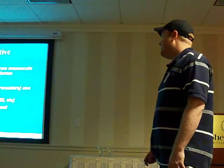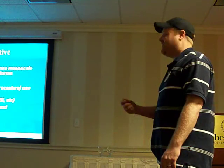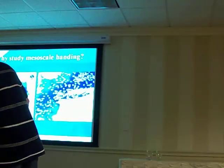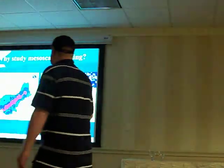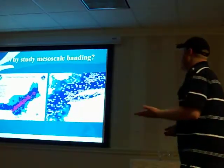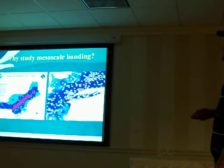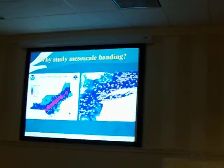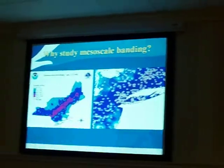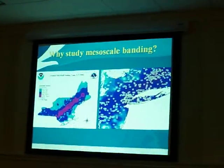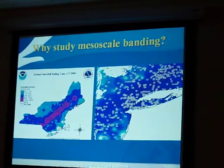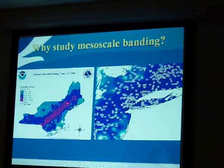It was very, very interesting — every hour something was changing. So why study mesoscale banding? I have a few images here of a couple of storms from the past. January 7, 2002: you have a really broad area of moderate snowfall, and right in the middle of that, a band pops out where they had almost two feet of snow.